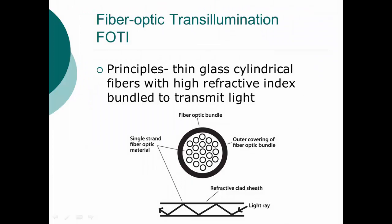When we talk about fiber optic transillumination, we're talking about FOTI — F-O-T-I. The principles really use a thin glass cylinder with fibers with a high refractive index bundle to transmit that light, as you can see from this schematic. The light will transmit through the fiber optic bundle, and wherever we place the end of that bundle transmitting the light, we'll be able to use that light to visualize different diagnostic conditions.